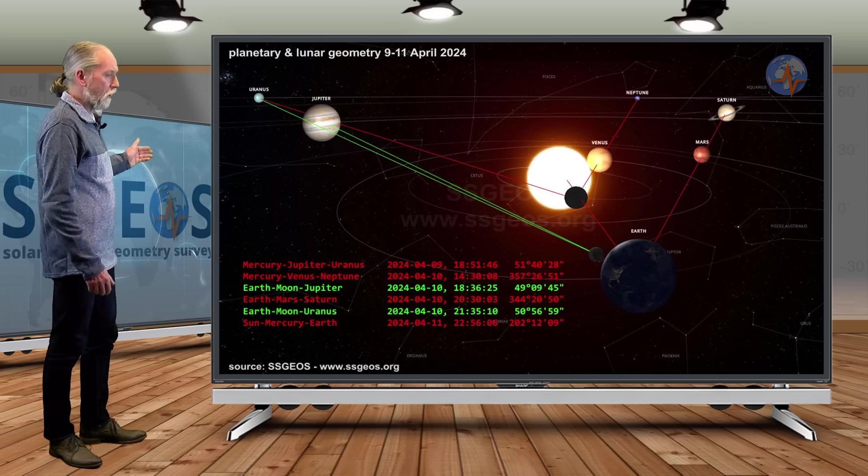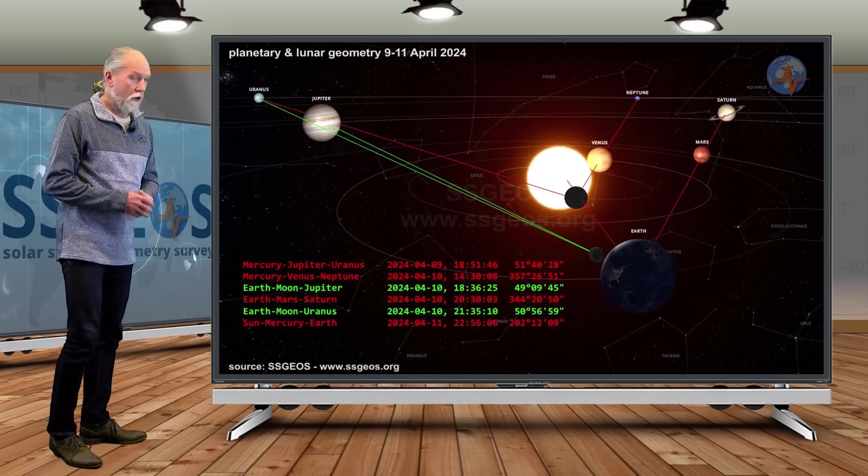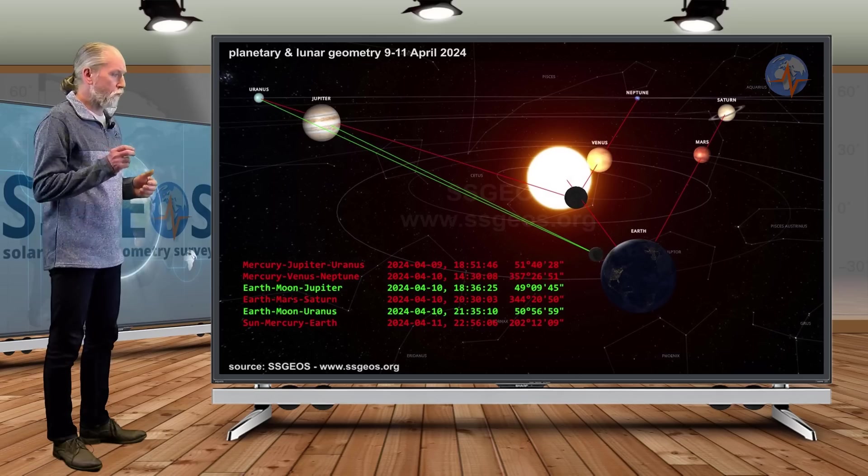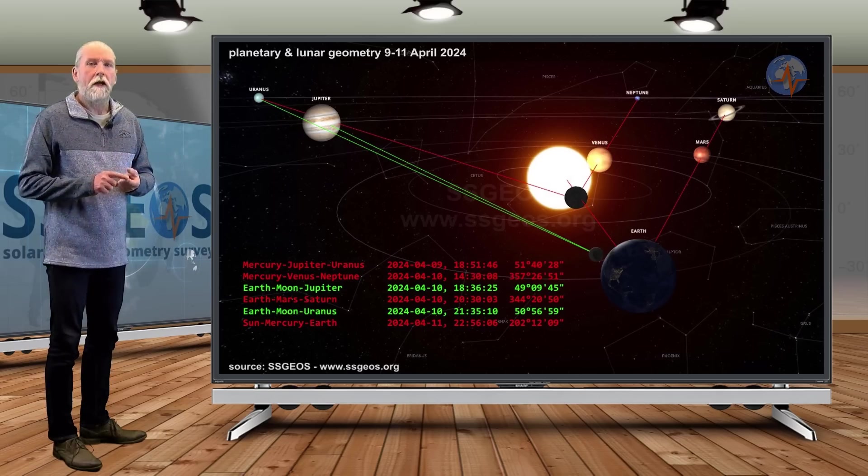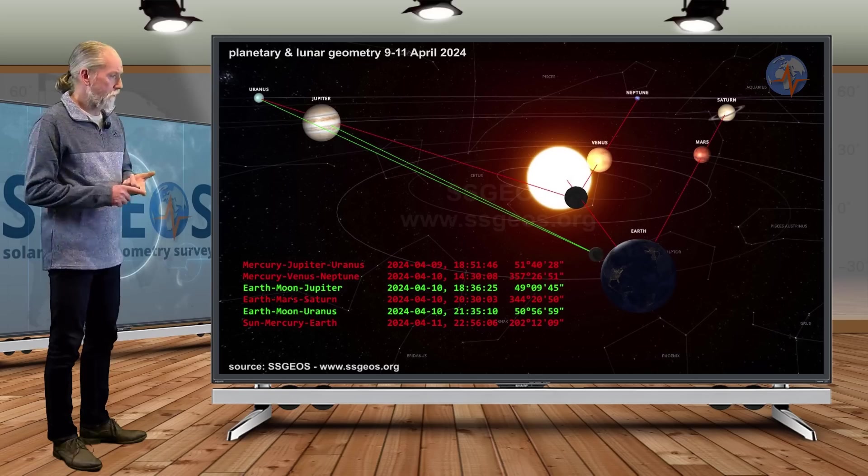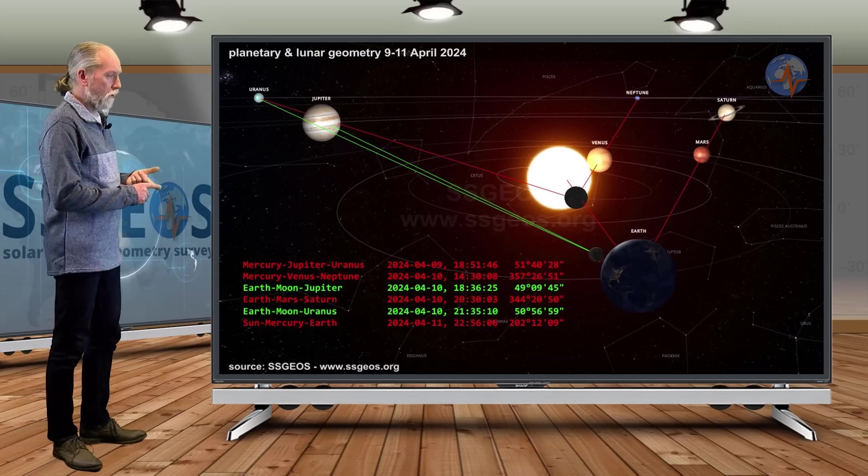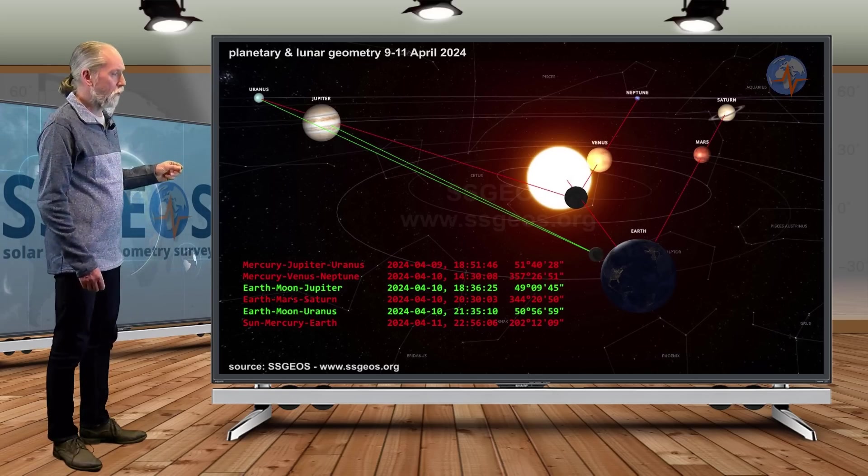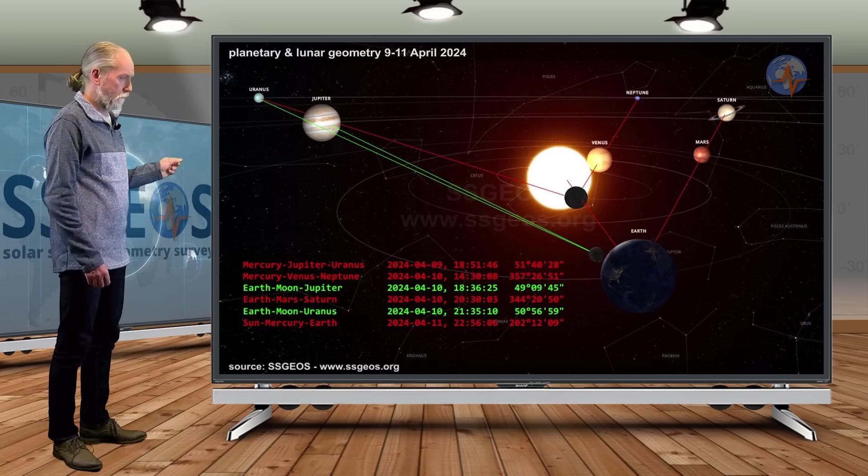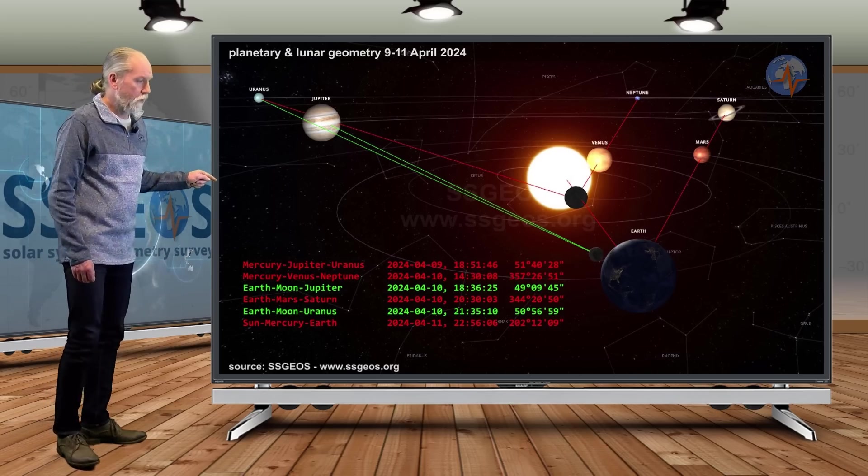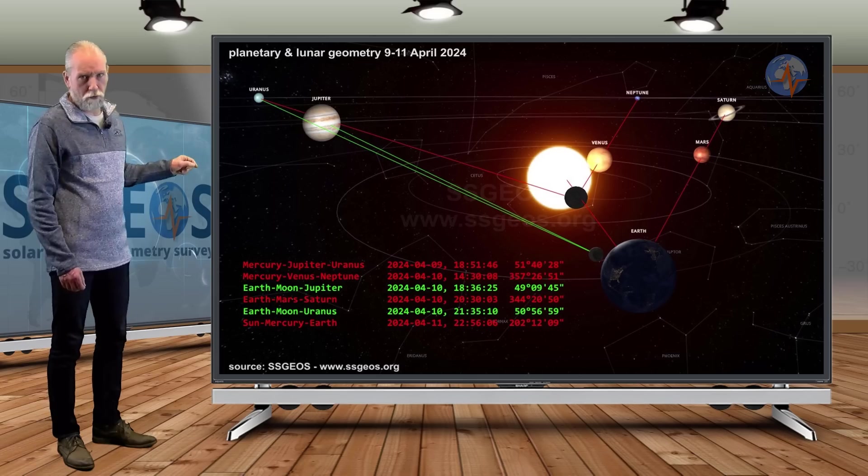As you can see we have Mercury, Venus and Neptune coming up. Critical conjunction. Because Mercury and Venus are both involved in a conjunction with an outer planet. And also, on top of that, we have Mercury in a conjunction with Jupiter and Uranus. And then on the 11th, we will have Earth in a conjunction with Mercury and the Sun.